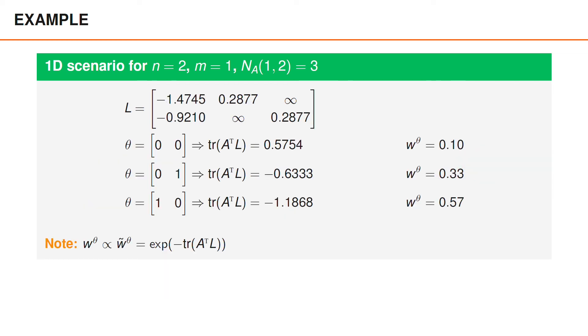If we compute the corresponding normalized weights, the probabilities of the data associations, we see that the weight of associating the detection to object one has highest probability, and the probability of two misdetections is lowest.